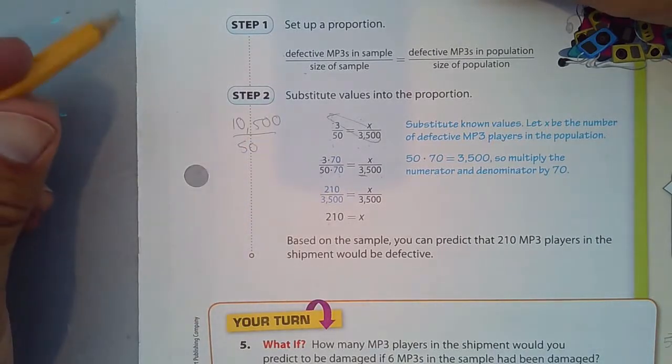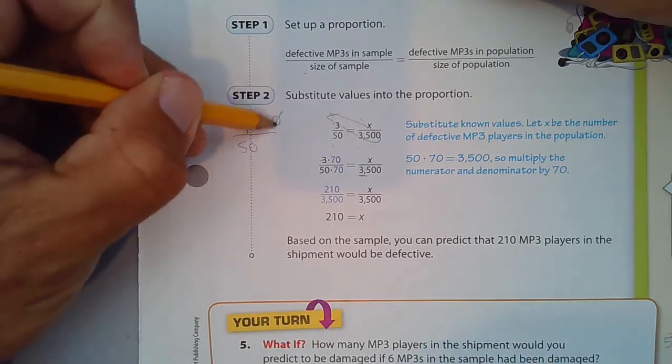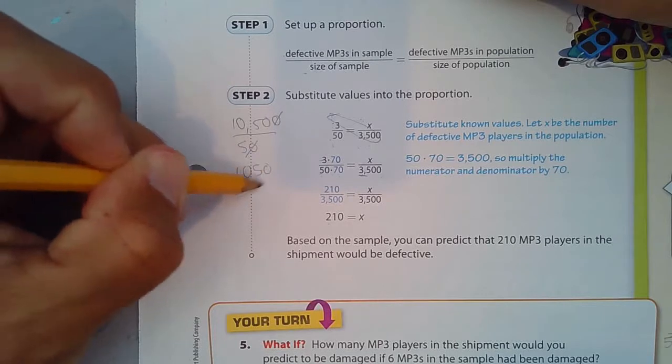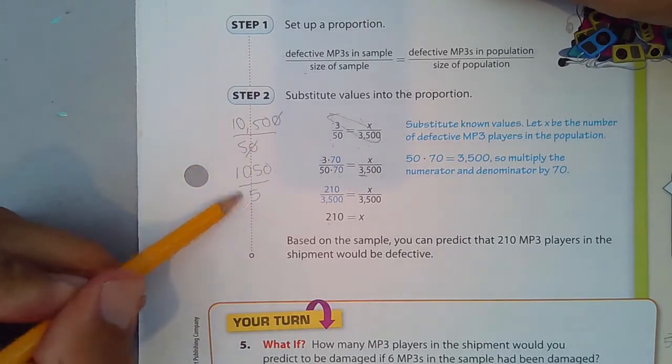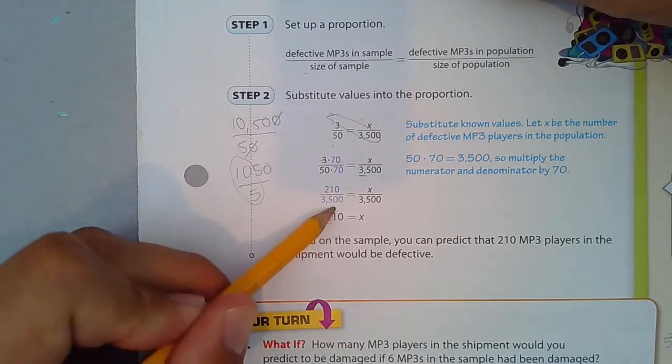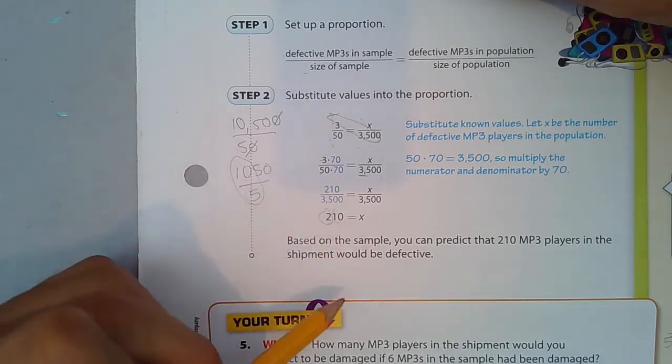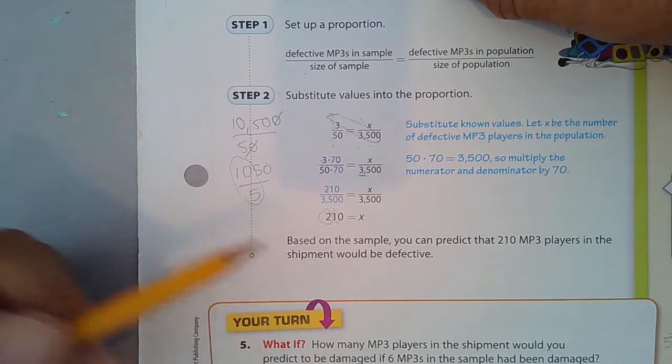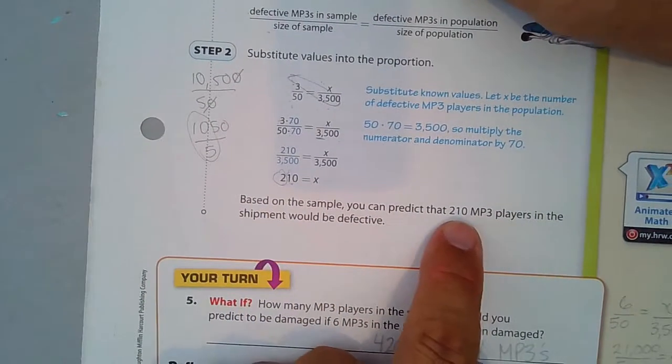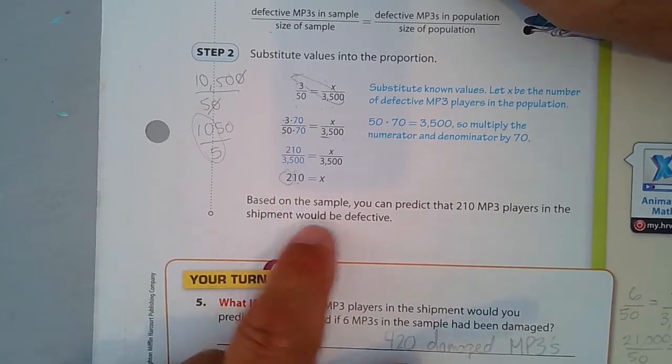An easy way to divide these, these zeros can cancel out. And I really have 1050 divided by 5. And look, 5 goes into 10 two times, and 5 goes into 5 one time, and 5 goes into 0 zero times. There you go. You can do it without a calculator. Based on the sample, you can predict that 210 MP3 players in the shipment would be defective.